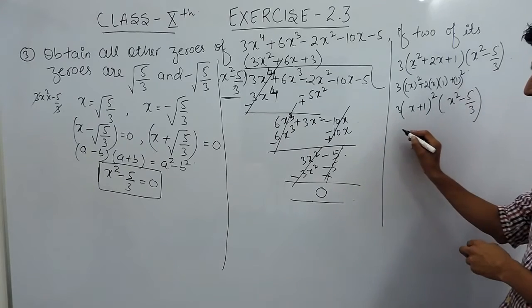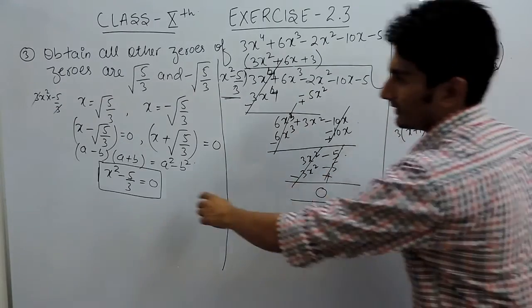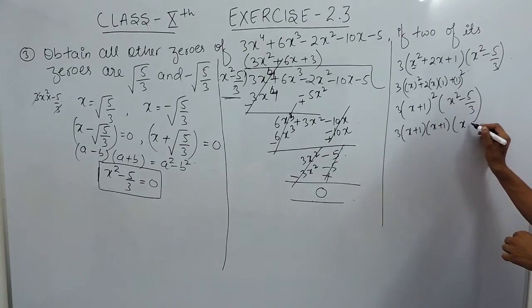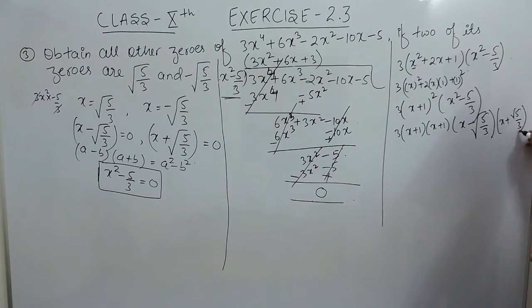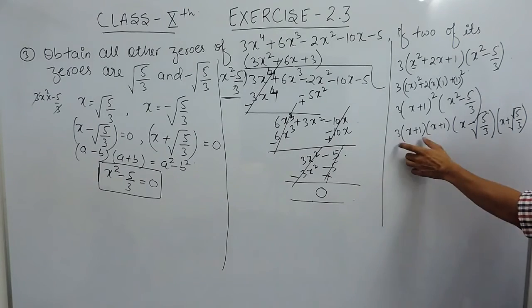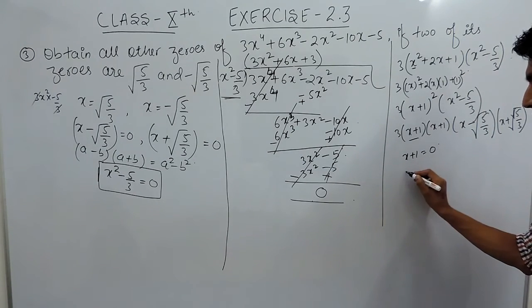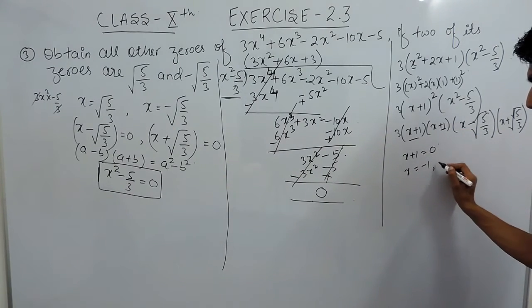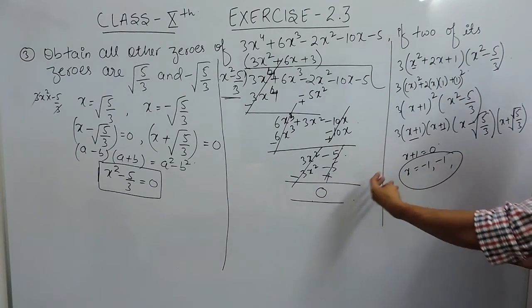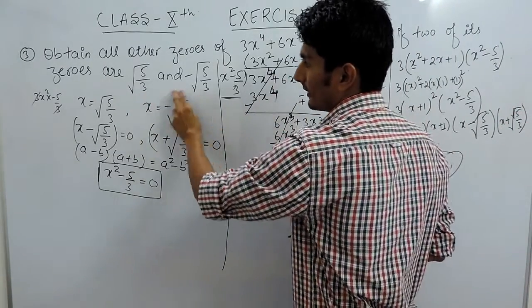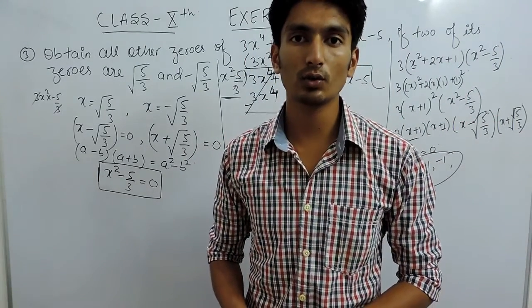This can be written as (x + 1)(x + 1), and (x² - 5/3) factors further as (x - √(5/3))(x + √(5/3)). So these four are the factors of the polynomial. Since (x + 1) = 0 gives x = -1, the remaining two zeros are x = -1 and x = -1. The zeros √(5/3) and -√(5/3) were already given in the question. This is how we solve this question.